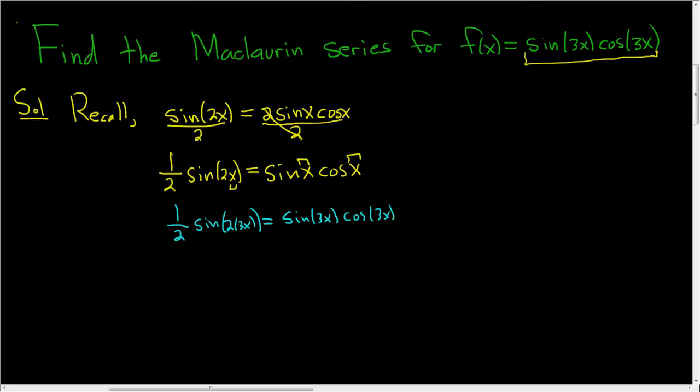So writing this again, let me come over here and write this on the left-hand side. f of x is equal to sine 3x cosine 3x. And this is equal to 1 half sine of,